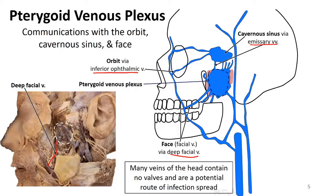Now these communicating veins do not have valves, and what that means is that the flow of blood is not necessarily one way. So an infection from the face could follow veins back into the cavernous sinus, leading to an infection within the cranial cavity.